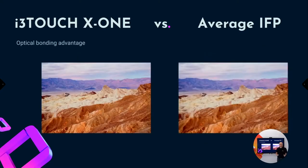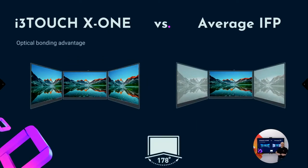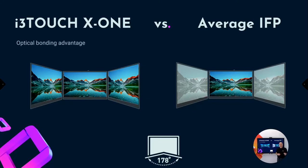This results in better image quality when you show pictures, videos, or whatever. And the last very important advantage of optical bonding is the viewing angle. All IFPs in the market have a viewing angle of 178 degrees, but with an optically bonded device you will notice that when you are at a sharp angle next to the display, the image will also remain sharp.